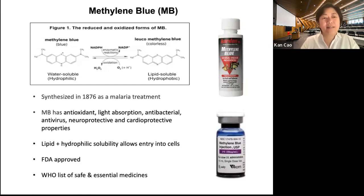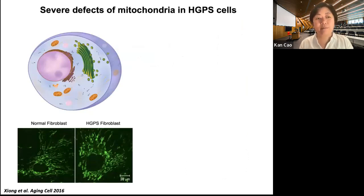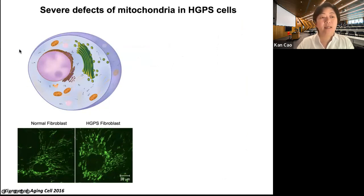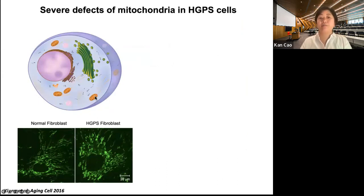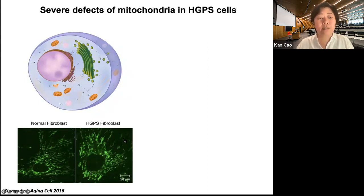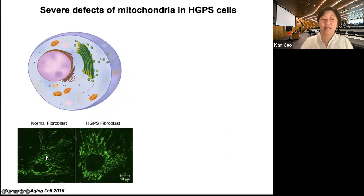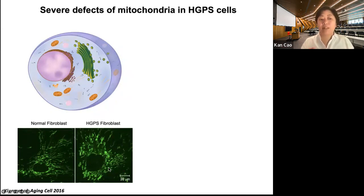Why did we start studying methylene blue? This comes from mitochondria. Mitochondria is the ATP production factory in the cell. Mitochondrial dysfunction is closely connected to human aging. In 2016, a scientist in my lab started looking at mitochondria in progeria cells and found they look very different from normal healthy skin cells. In normal cells, mitochondria look like rods or fibers — very long. In progeria cells, they become swollen and fragmented.